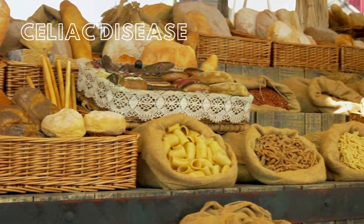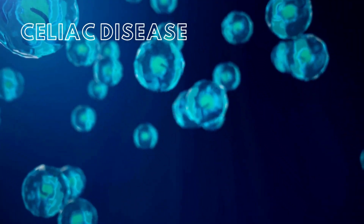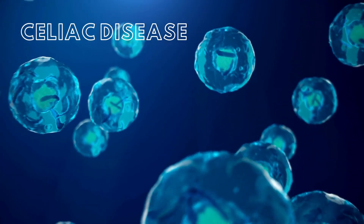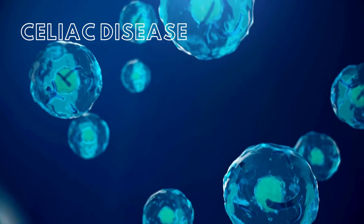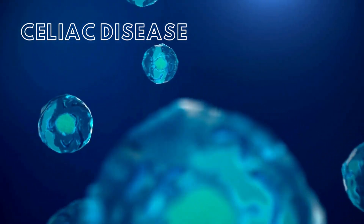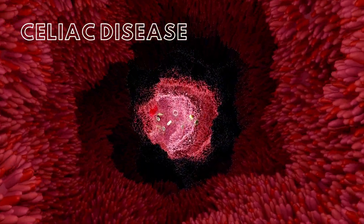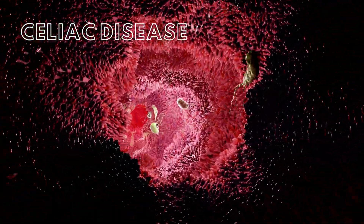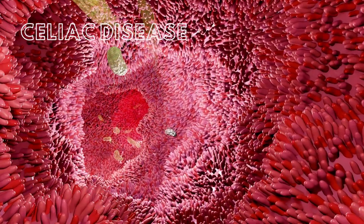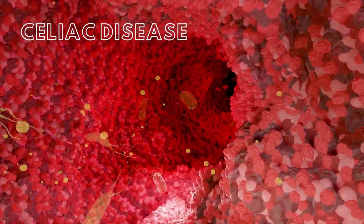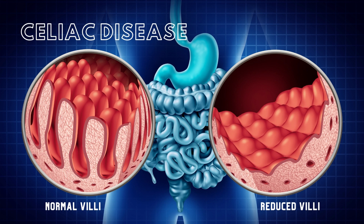Certain molecules within the intestinal epithelium bind to peptides and present them to T cells of the immune system. If these peptides are pathogen-derived, the T cells initiate an immune response. In celiac disease, the immune system is misguided and inappropriately responds to the gluten peptides, causing inflammation within the small intestine. This reduces the height and number of intestinal villi, thereby reducing the surface area and the ability to absorb nutrients.